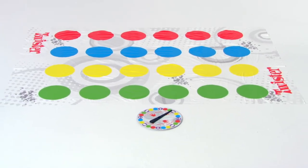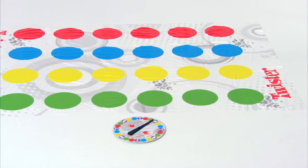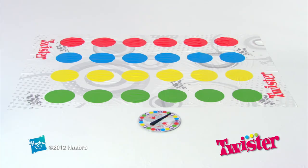Twister is for two or more players age six and up and comes with one Twister mat, one spinner, and instructions. Adult assembly is required. Twister from Hasbro!